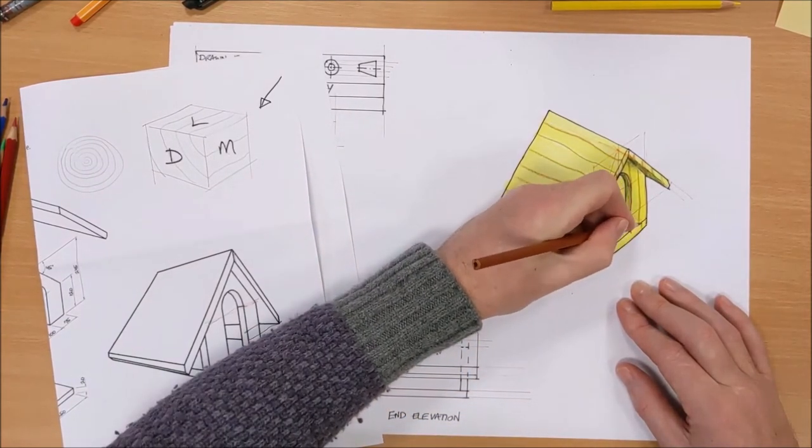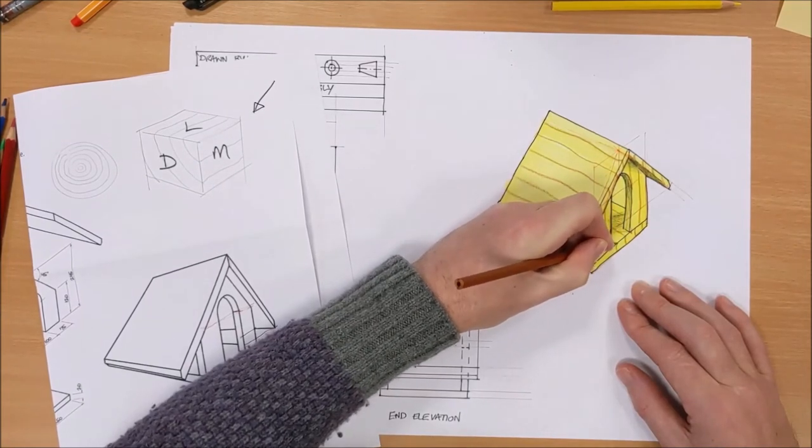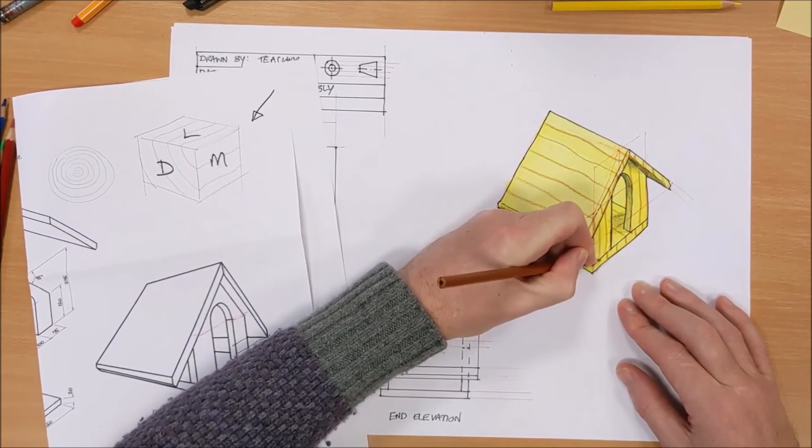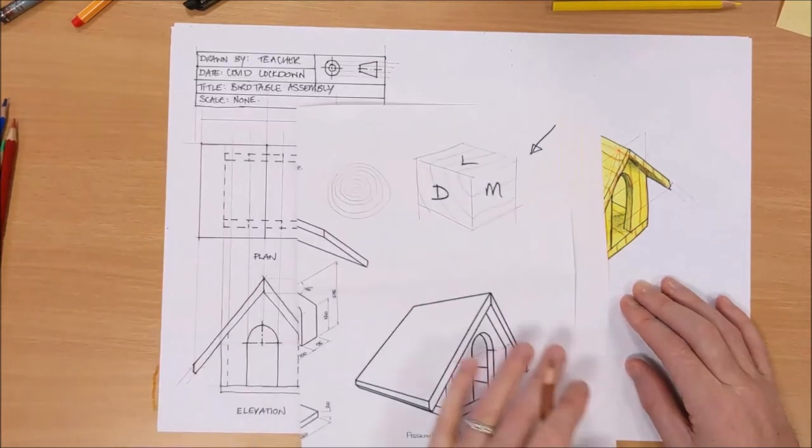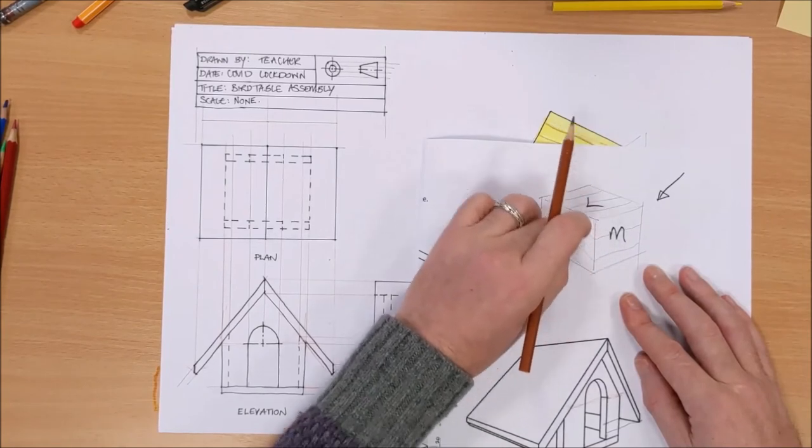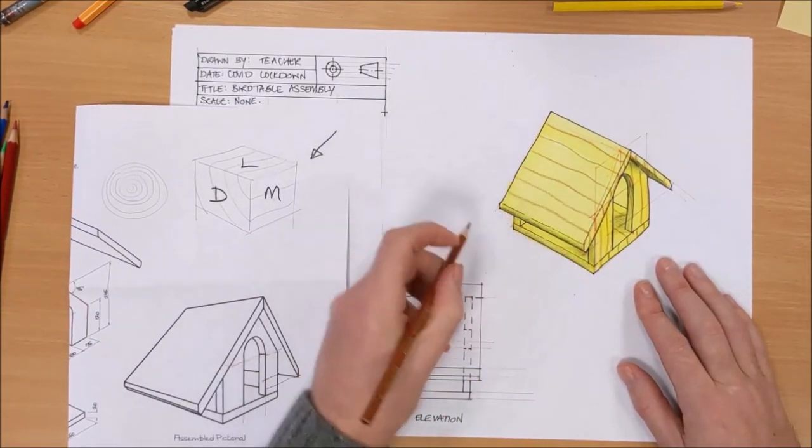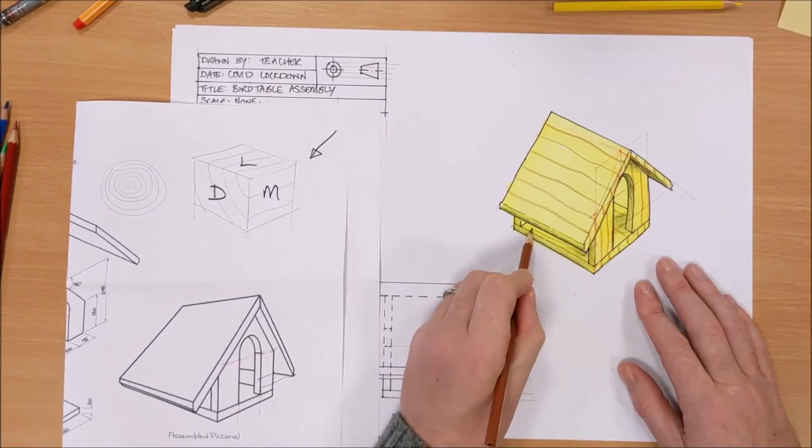And then on the inside there will be a bit of wood grain there, so we're going to think now there's going to be curved wood grain on that part. Again, think of a bit of wood. All the wood grain goes along the length, but on the end grain you get the curved bits. And that means there's going to be a bit of wood grain there.